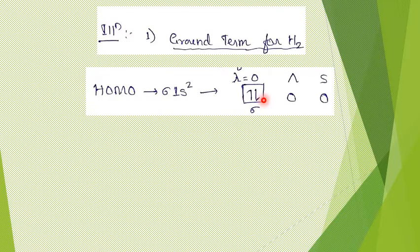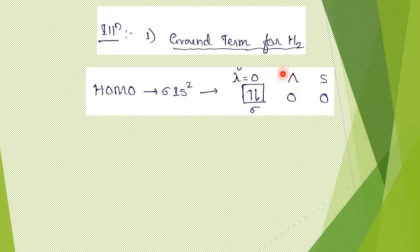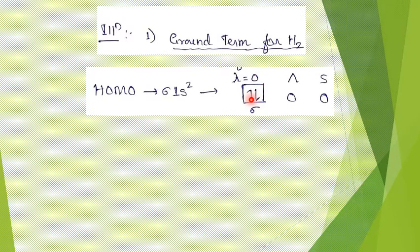Just as in atomic term symbols we take small l values to get capital L, here we take small lambda values for each electron to get capital Lambda. For a sigma orbital, the small lambda value is 0. Therefore, with two electrons both in sigma, the capital Lambda value is 0 + 0 = 0. For the total spin S: with plus-half and minus-half, overall S = 0.